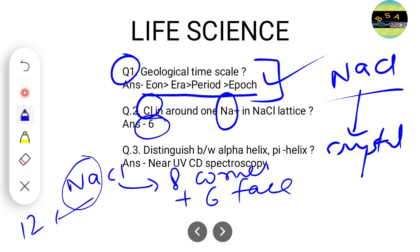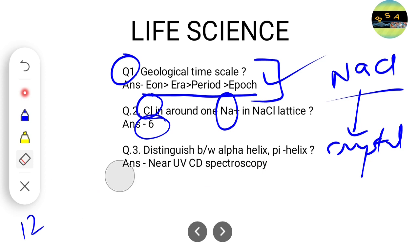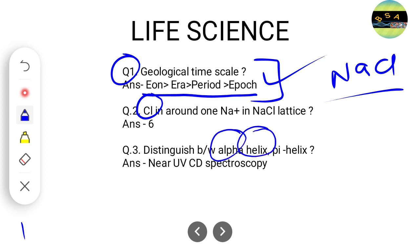The next question asks how to distinguish between alpha helix, pi helix, and 310 helix structures. These can be easily distinguished by near UV CD spectroscopy. This is the correct answer for these three questions.